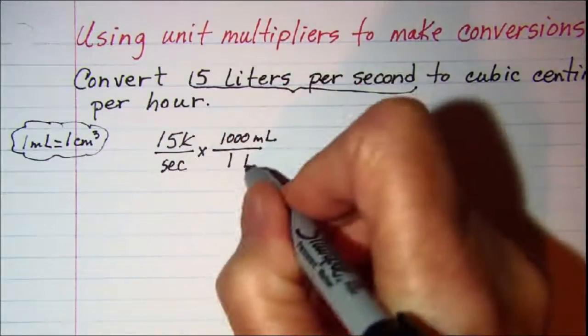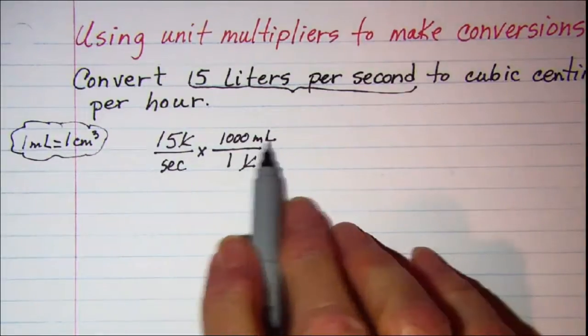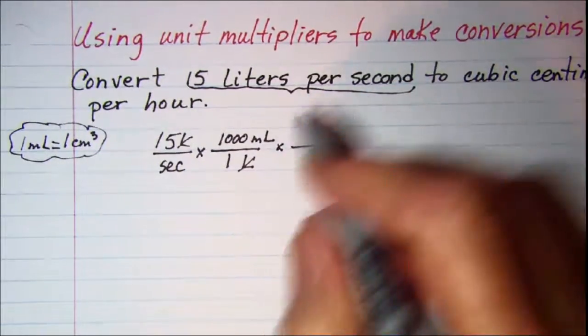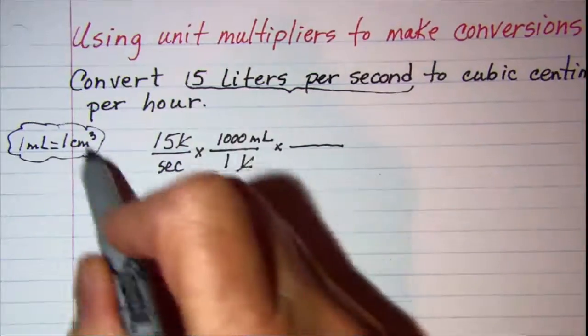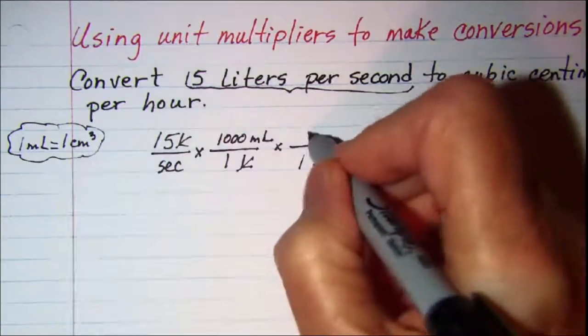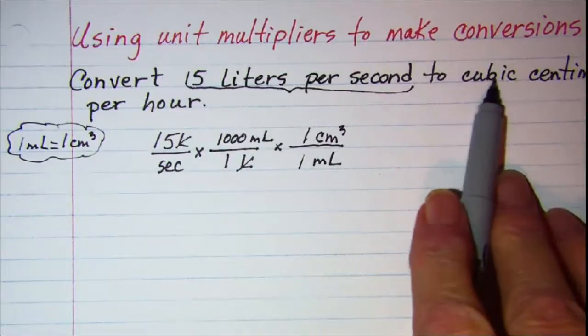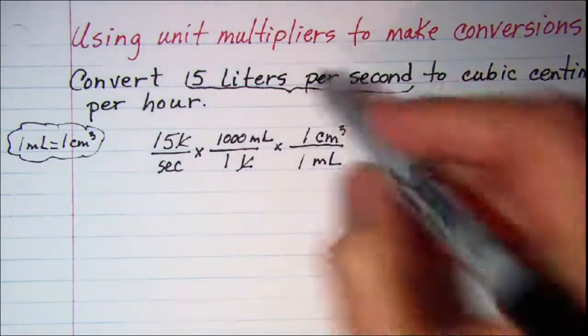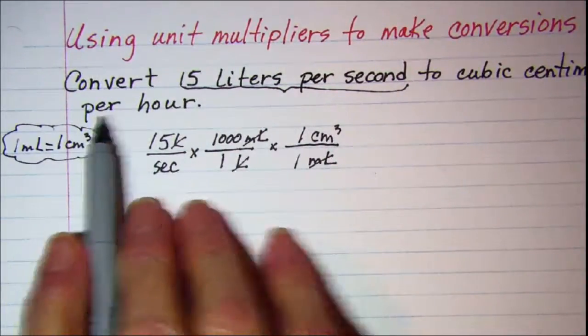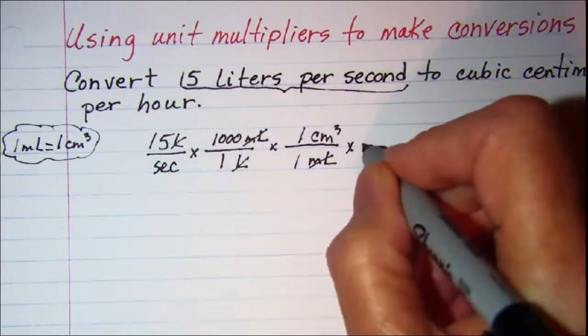Now our liter unit will cancel off and we're now in milliliters per second. But now since I'm in milliliters I can use this unit multiplier. Since I want to cancel off milliliters, I'll put my 1 milliliter in the denominator and 1 cubic centimeter in the numerator. Now I have the correct volume unit, but I still need to do cubic centimeters per hour.